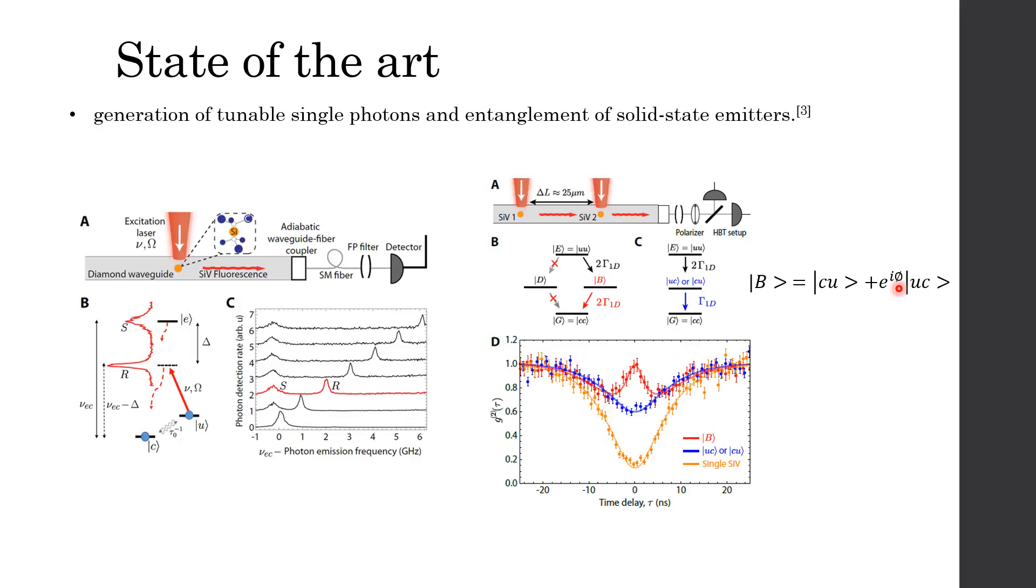If the Raman transition of two SiV centers are not tuned into resonance, the photons are distinguishable. And the detection of first photon prepares the system in a statistical mixture of state UC and CU. After the first photon detection, this state scatters photons at a single emitter rate of gamma 1D, resulting in the autocorrelation G equals to 0.63, which is close to the conventional limit associated with two single photon emitters.